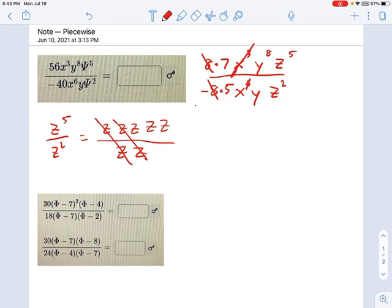So this x cubed cancels out, and that one is left with a 3. This y cancels out, and that one is left with a 7. And the z squared cancels out, and it leaves behind a 3.